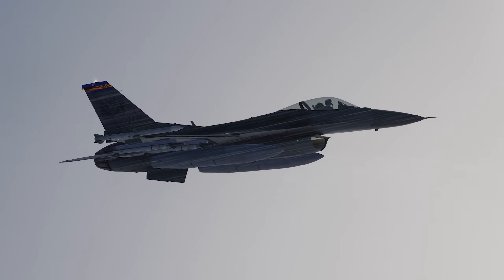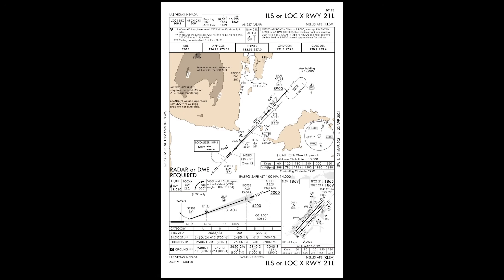Let's go right to the chart for the ILS to 21 Left into Nellis. Here's the approach chart — ILS for runway 21 Left into Nellis Air Force Base. You always read the chart from left to right starting from the top left. First thing we want to make sure is the date is correct: 25 March 2021 to 22 April 2021, so that is the current chart. Starting on the top left: localizer frequency 109.1, and 209 is the inbound course or approach course — we need both of these numbers for the ILS approach.